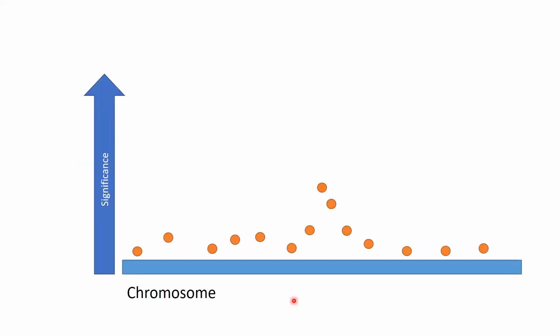This illustration shows the use of LD and why it is important in genomics. We have a chromosome with SNPs on it, and we did some kind of analysis where we found the significance of each SNP — the higher the SNP position, the higher the significance level.